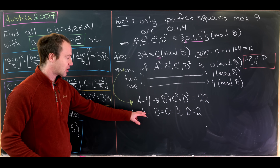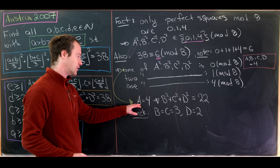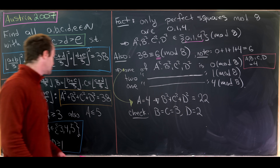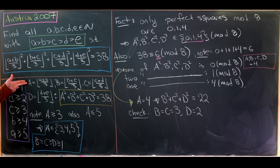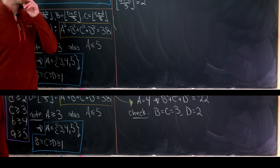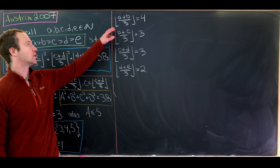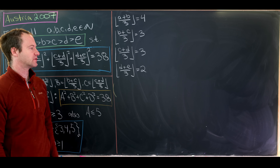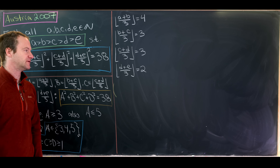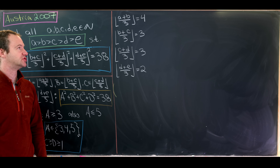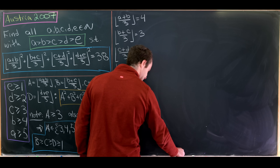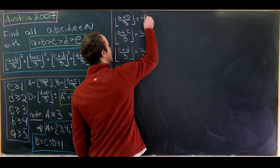So now we have: floor of (A+B)/3 = 4, floor of (B+C)/3 = 3, floor of (C+D)/3 = 3, and floor of (D+E)/3 = 2. Let's take each of these floor equations and translate them into inequalities.